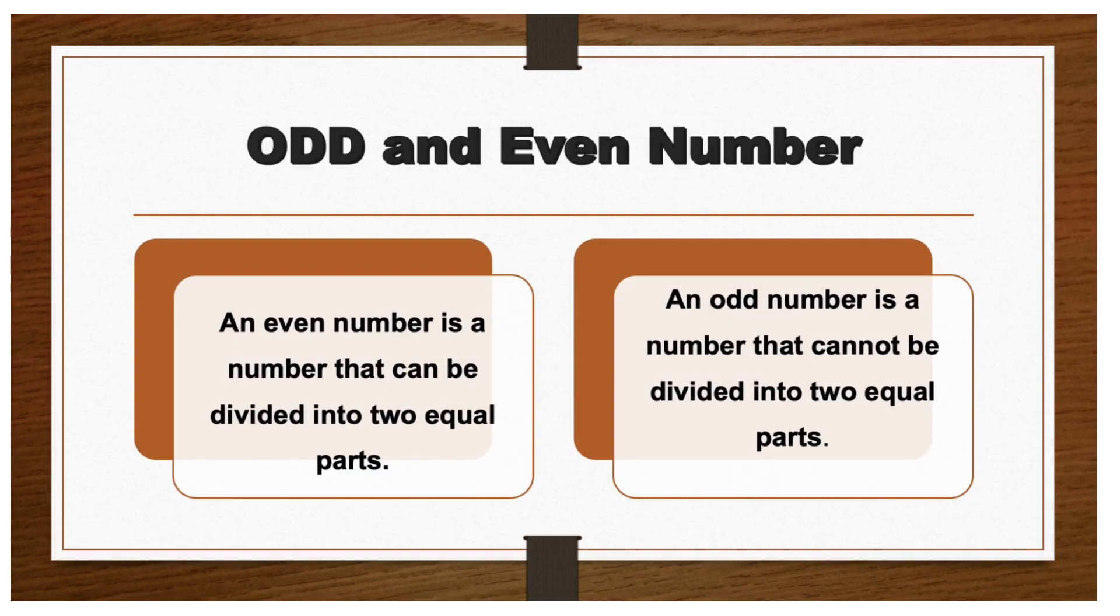What is an even and an odd number? An even number is a number that can be divided into two equal parts, while an odd number is a number that cannot be divided into two equal parts.